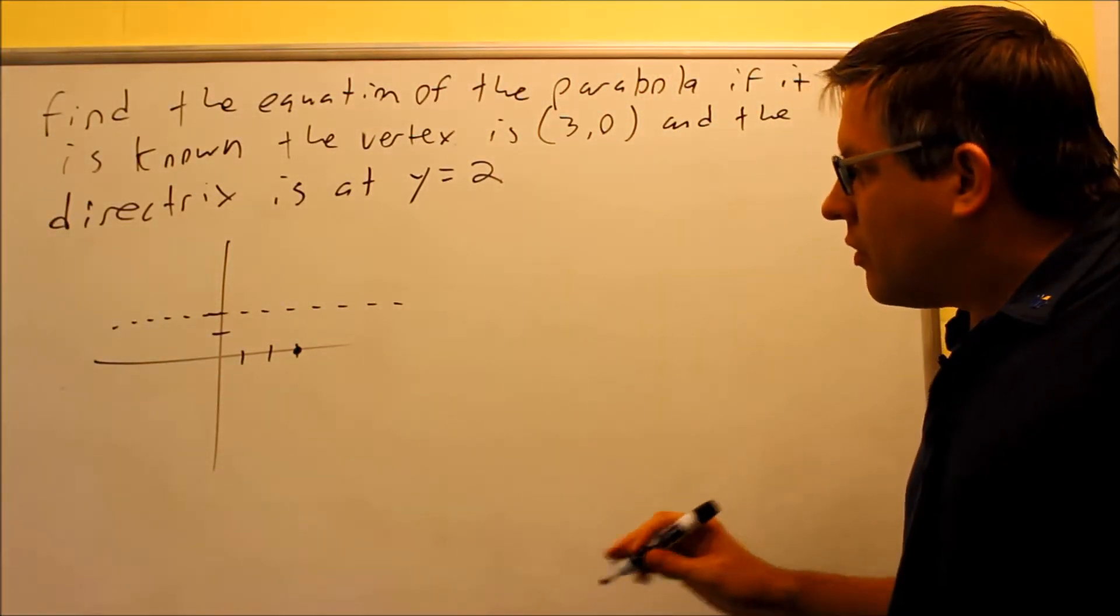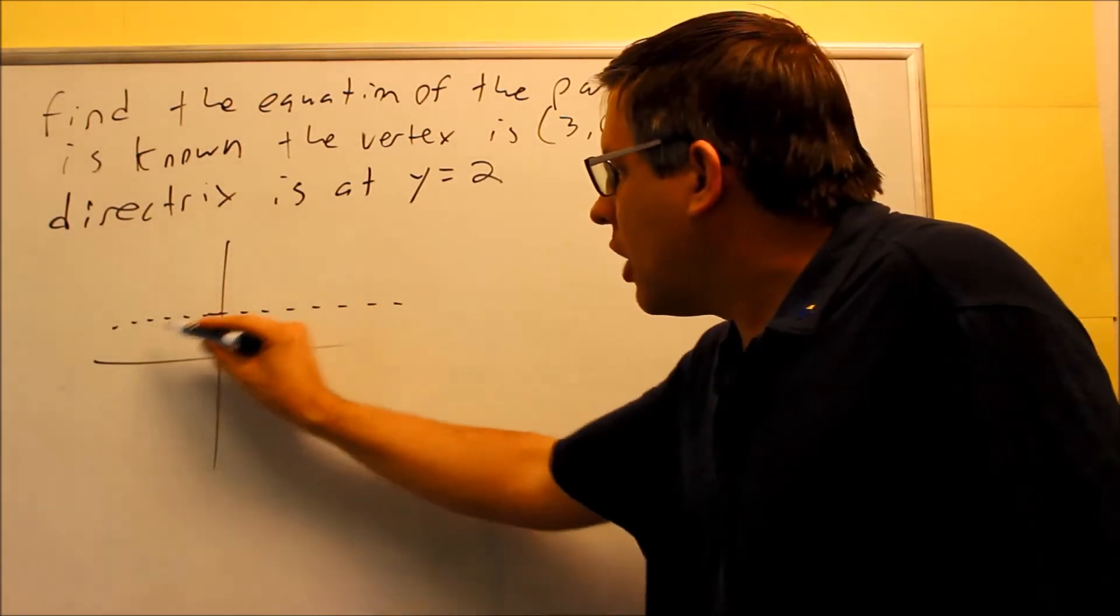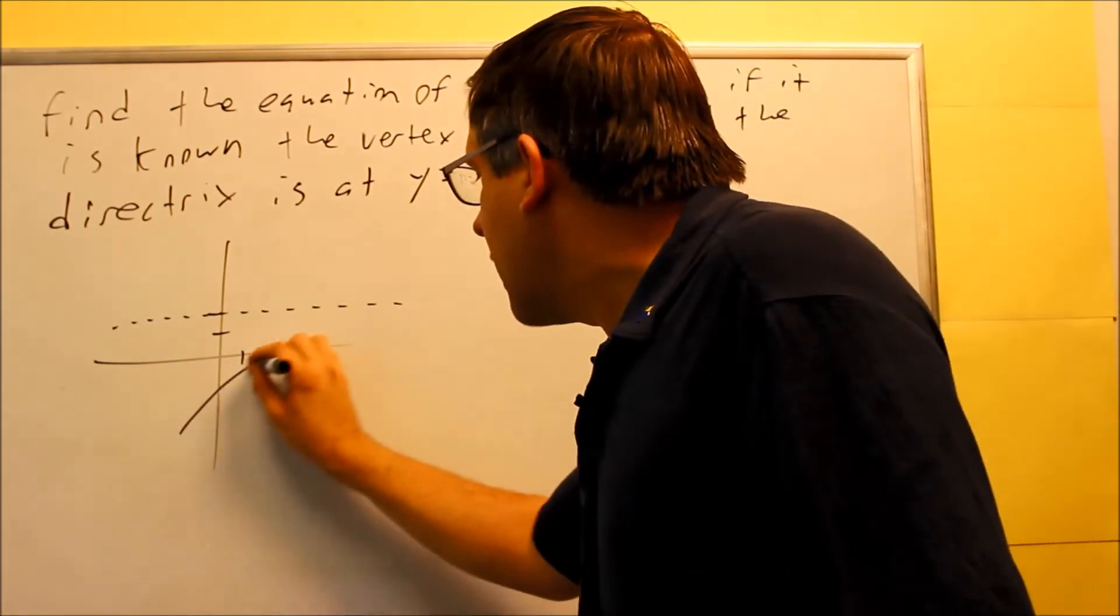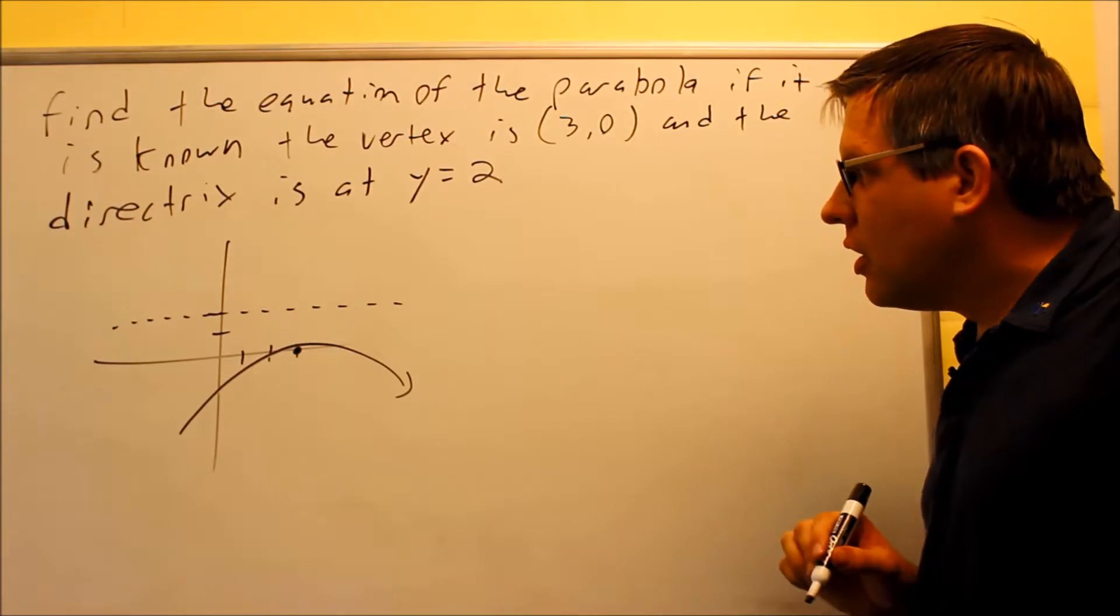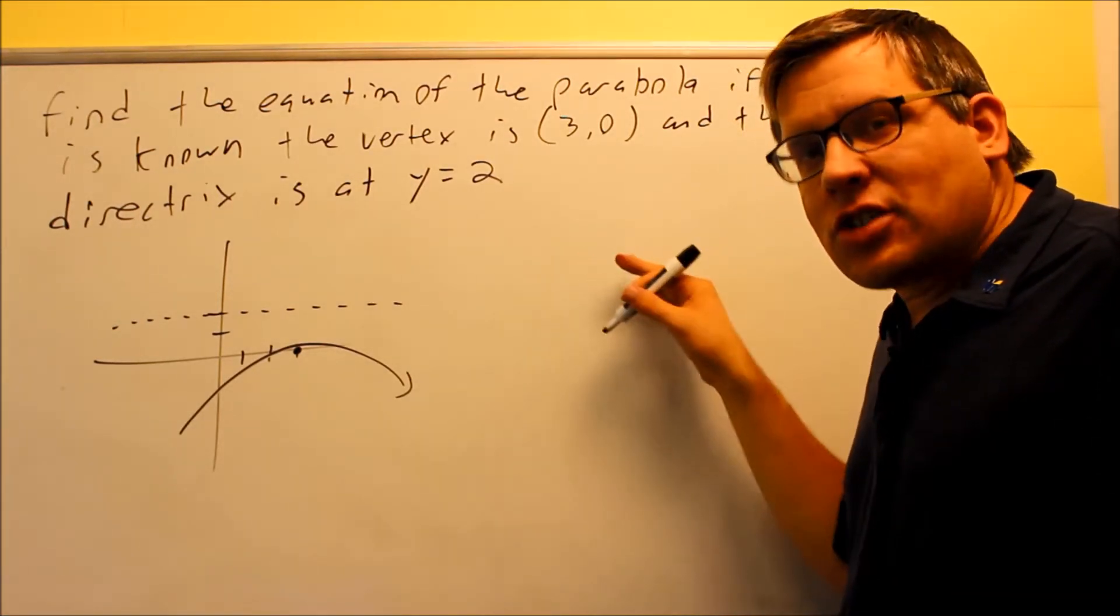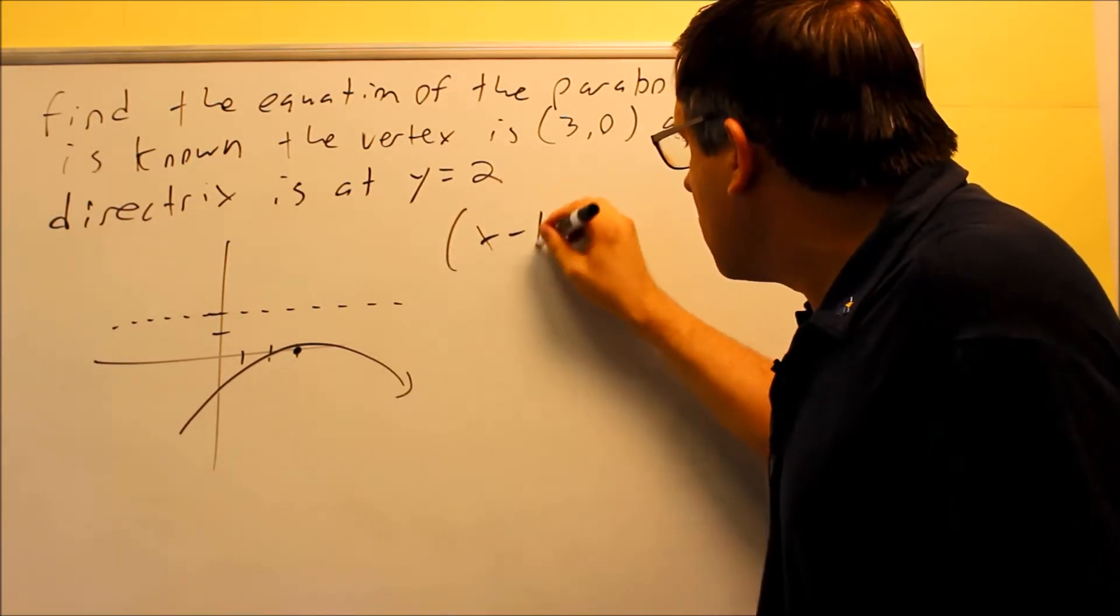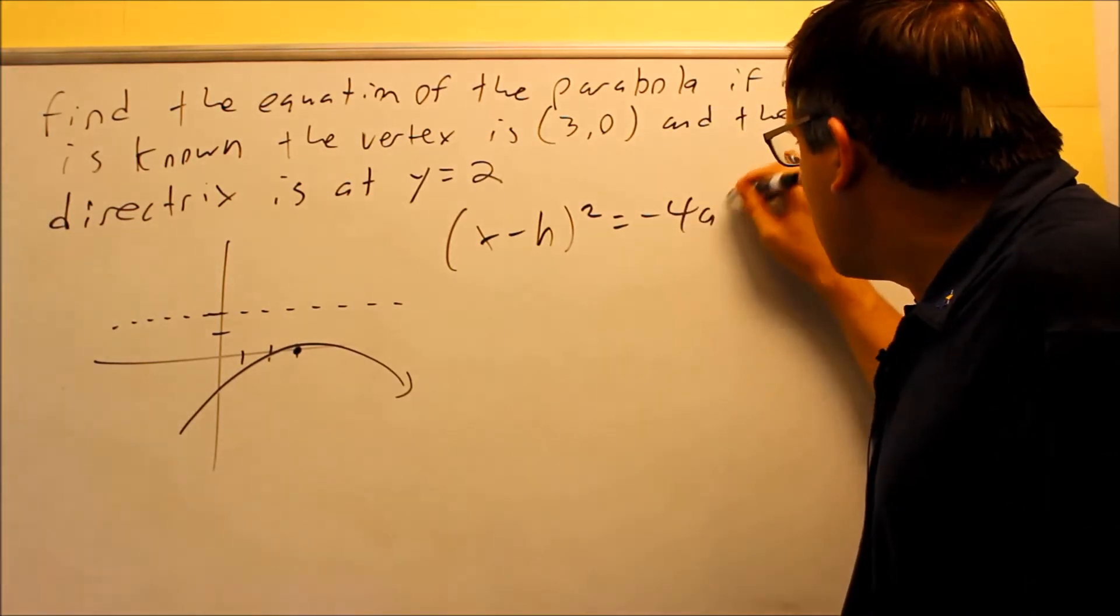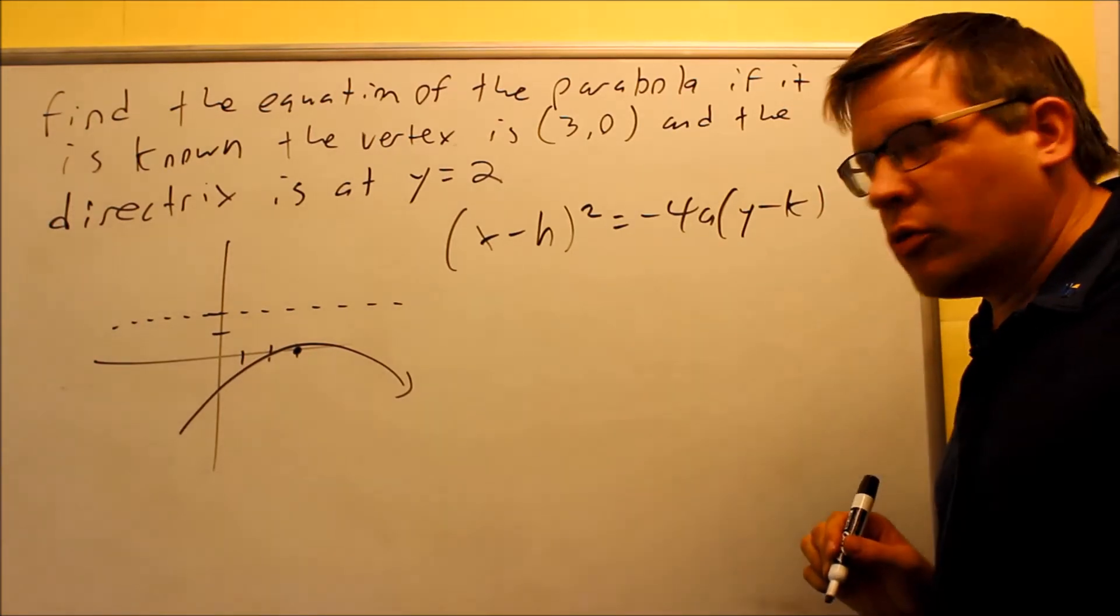What this tells me is that the parabola is going to open down. Now how do I know that? It's because the parabola always opens in the opposite direction as the directrix here. So because of that, I know for sure it's going to be opening down. So I want to look for one of the models that's centered at h, k that opens down. So if I look at my notes for the different models, then this is the one that matches. It'll be negative 4a because it opens down and I have y minus k. So that's the base model I want to work with here.